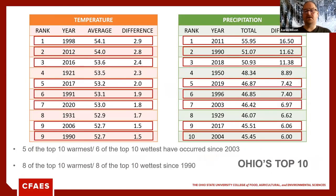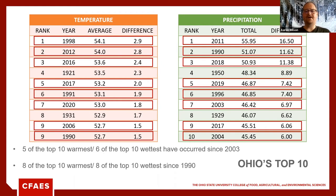Looking at our top 10 wettest and warmest years, eight of the top 10 have occurred since 1990. There's no doubt we're farming in a warming and wetter environment. Even with wet overall conditions, we're still seeing mid-growing season droughts — short-lived and intense — along with extreme rainfall and downpours, all tied to our overall changing weather patterns.